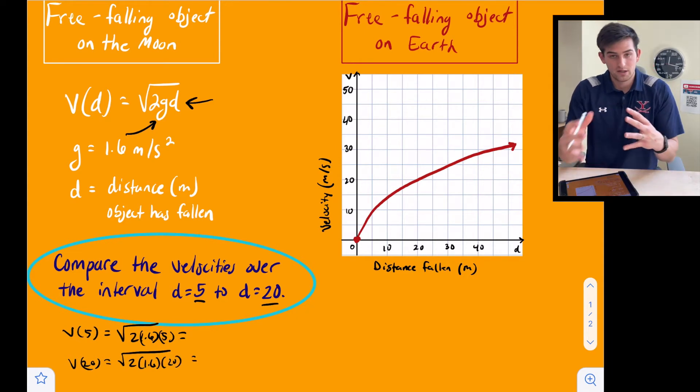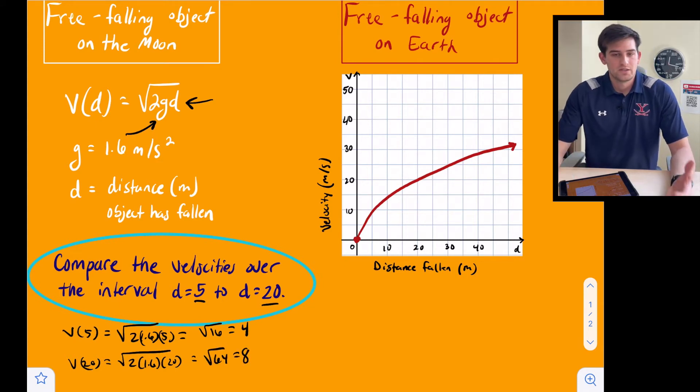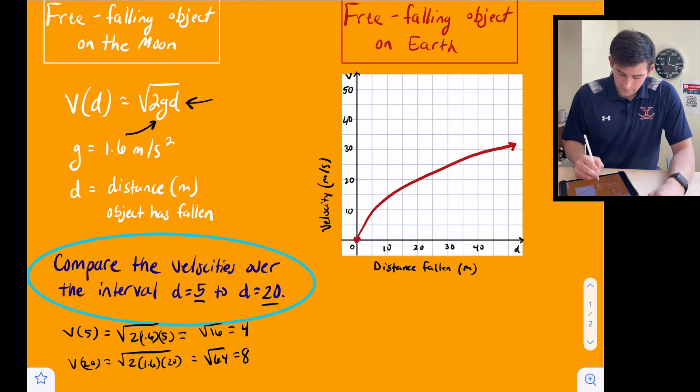When we plug in our calculator, for v of 5 we get the square root of 16 which is 4, and for when d is 20 we get the square root of 64 which is 8. So now this gives us two coordinates: 5 comma 4 and 20 comma 8. Now with these two coordinates we can find the slope between those two points, or the rate of change.